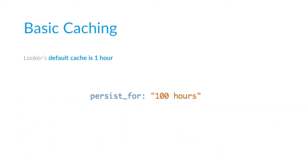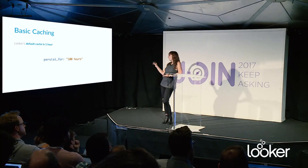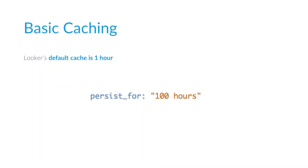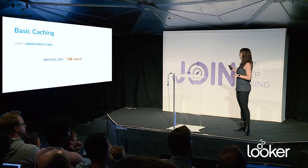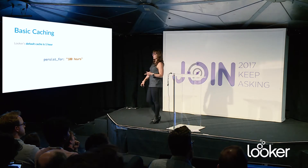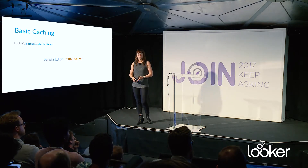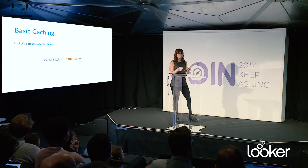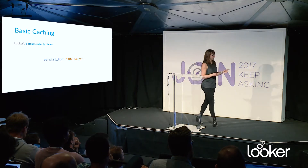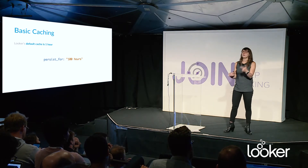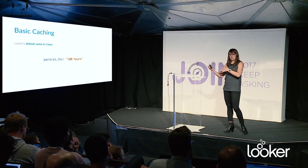Looker's always had what I consider basic caching. Looker's default cache is one hour — if you've been a Looker customer for a very long time, it used to be five minutes, but it's now one hour by default. We've always had this parameter called 'persist for' that would allow you to set your own arbitrary cache length if you wanted it to be longer or shorter than that default of one hour. When the cache expires, we get rid of all of those result sets — that's called invalidating or busting the cache. That means when you run that same query again, you're going back to the database and getting fresh data.